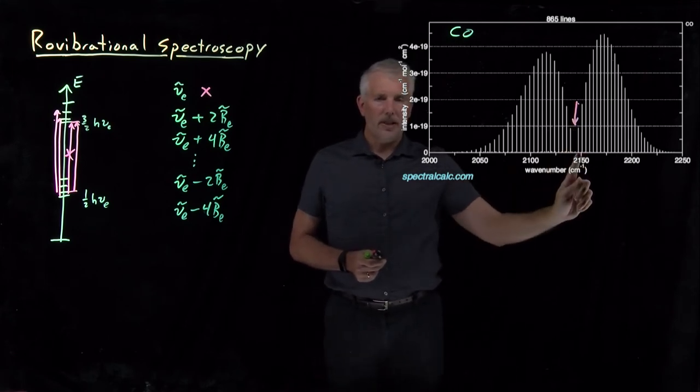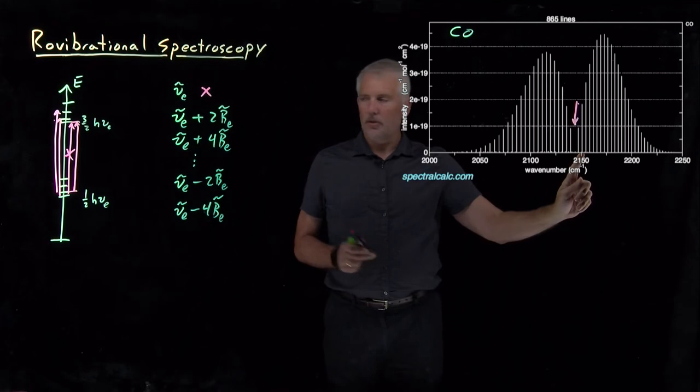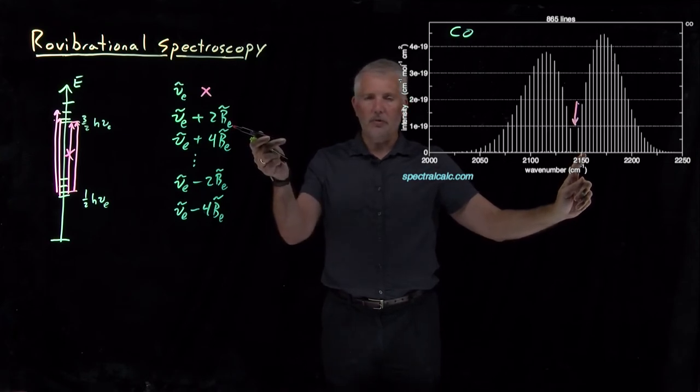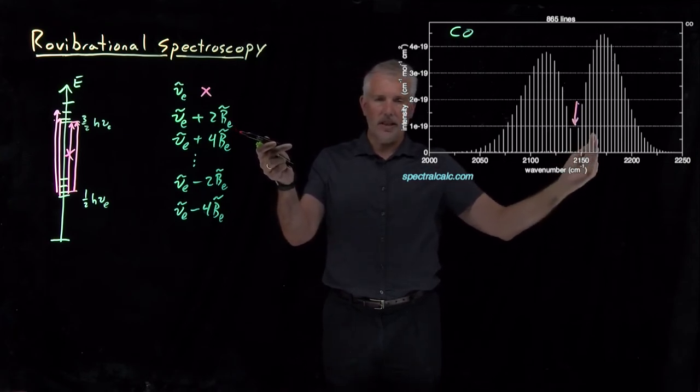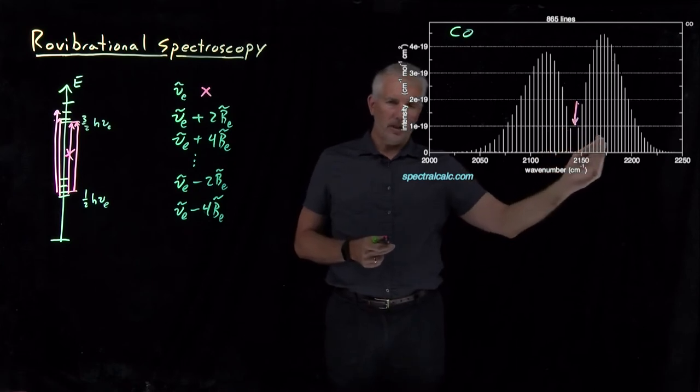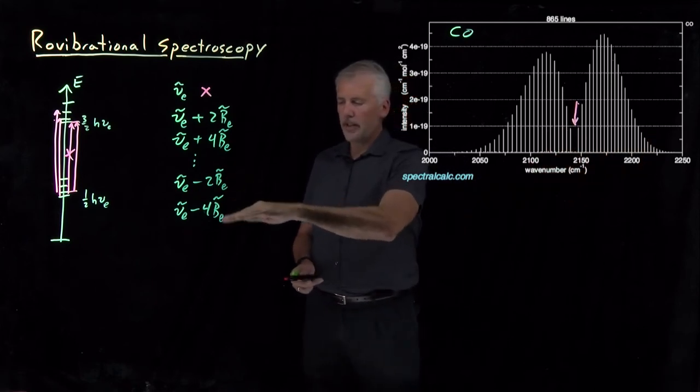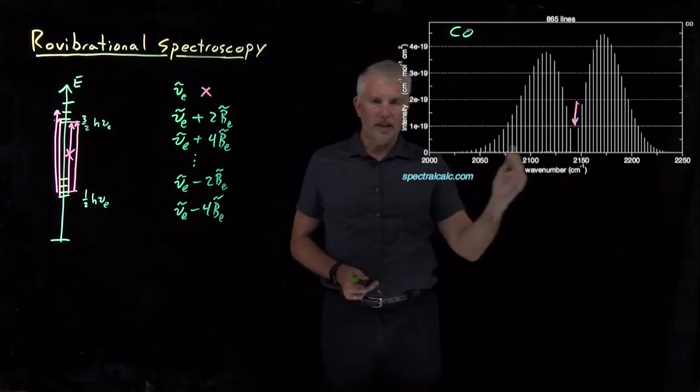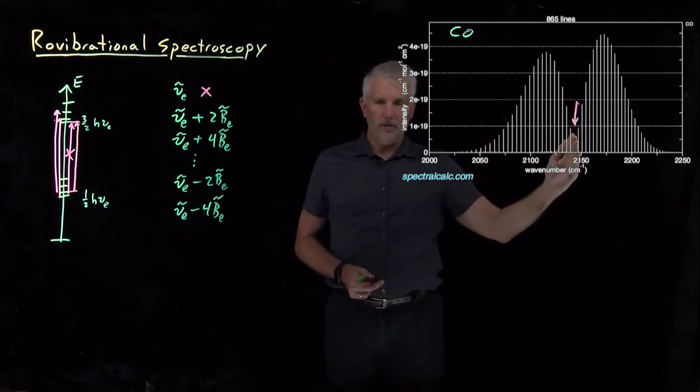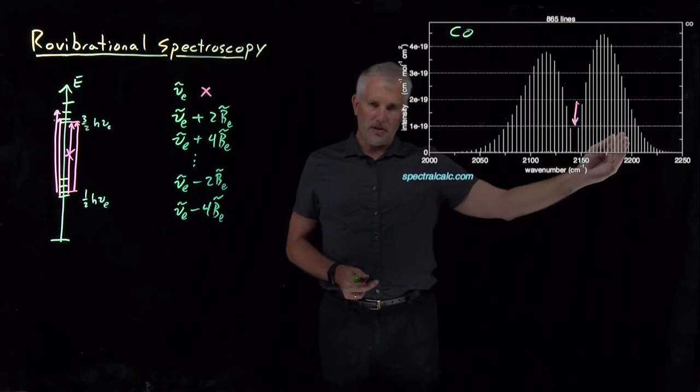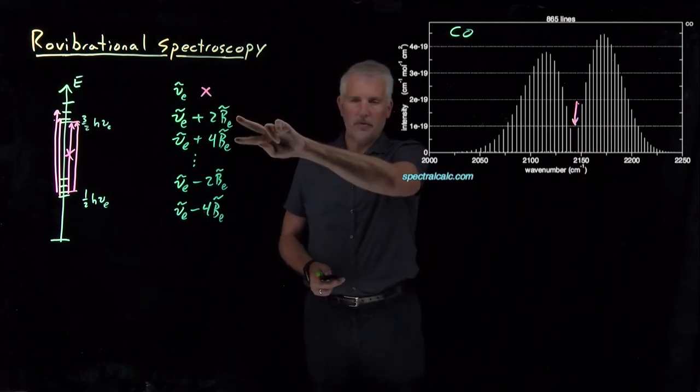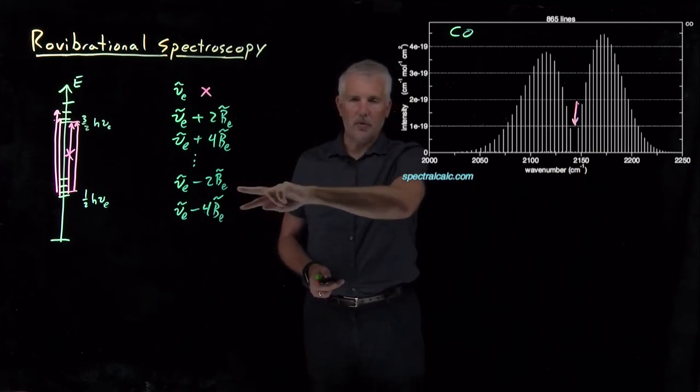But if I increase that frequency by twice the rotational constant, or four times, or six, eight, ten, twelve evenly spaced lines in the spectrum on the positive side, or evenly spaced lines on the negative side, fundamental vibrational frequency plus multiples of the rotational constant, or minus multiples of the rotational constant.